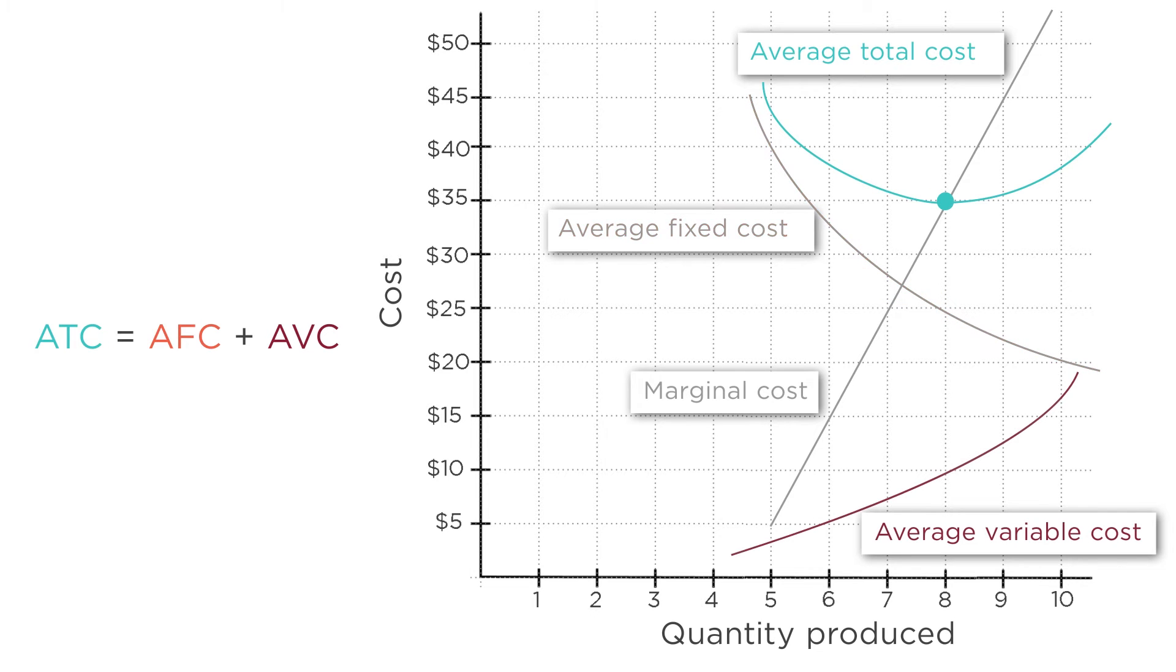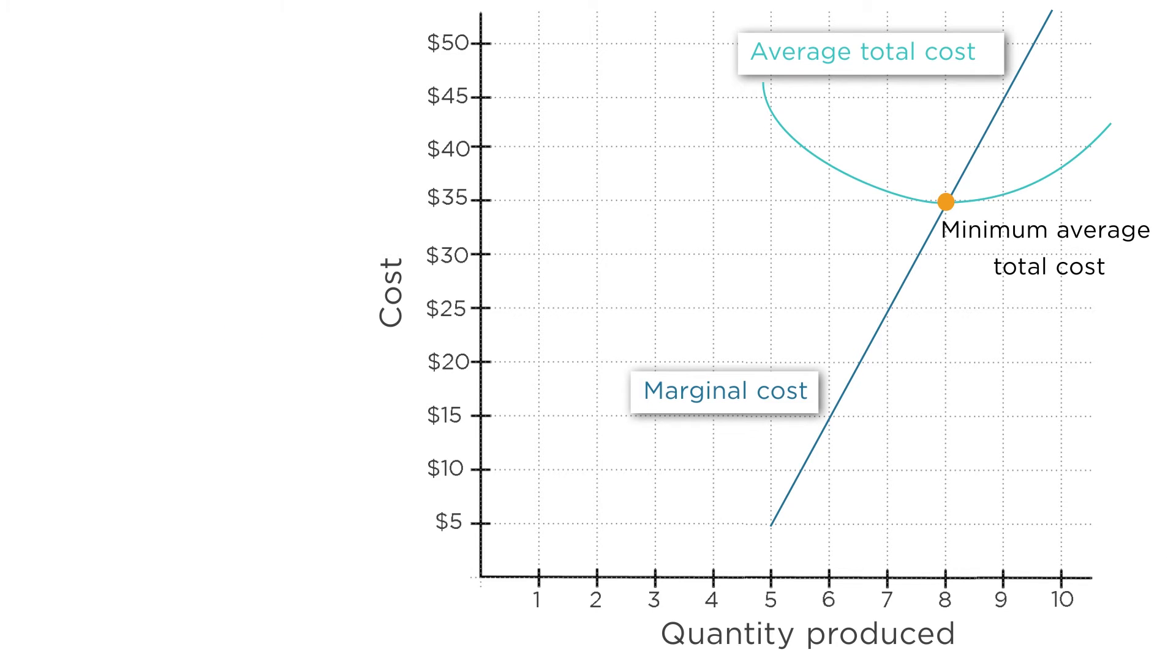But eventually, the second effect overtakes the first effect, and the average total cost starts to climb. At the bottom of the U-shaped average total cost curve, these effects exactly balance out. At this point, average total cost is at its minimum level, the minimum average total cost. Note that the marginal cost curve crosses the average cost curve exactly at this point of minimum average total cost. This is not an accident.